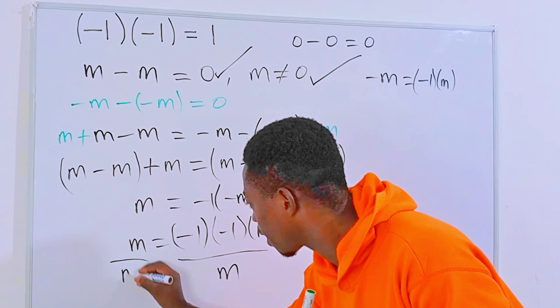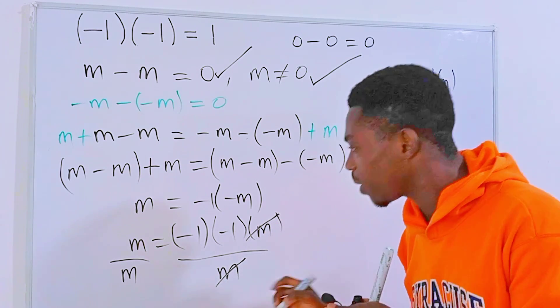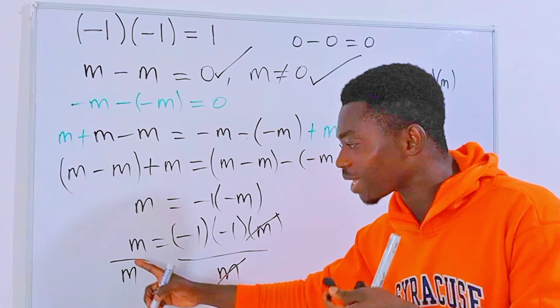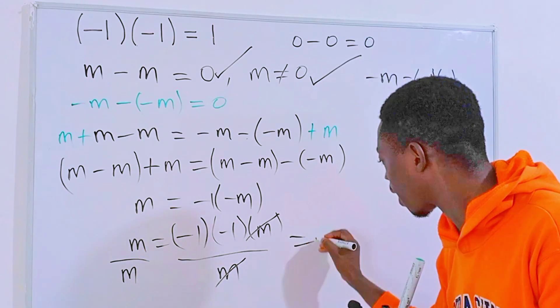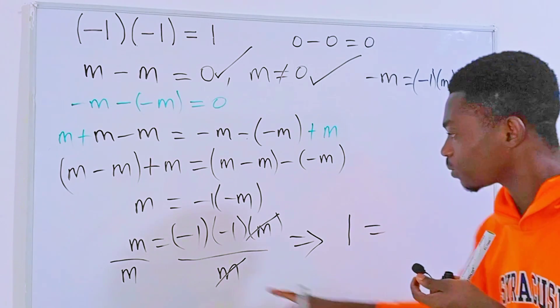So that this and this will go. Then on the left hand side, any number divided by itself is one, so we can say that m over m is basically one, and this is equal to negative one times negative one.